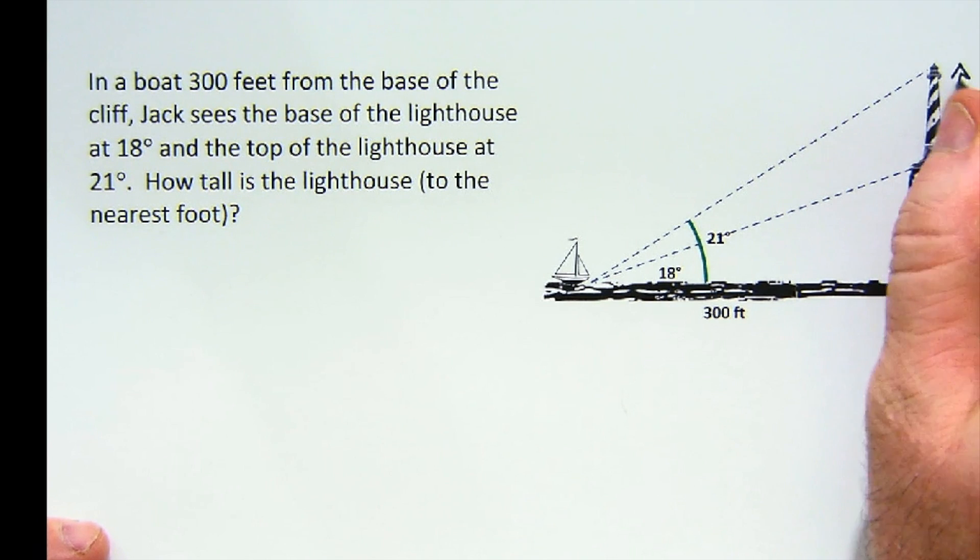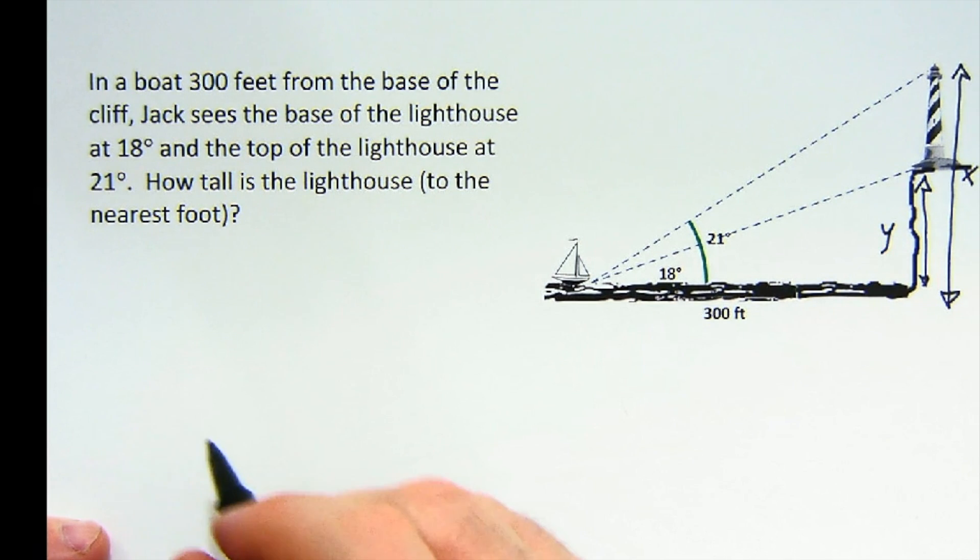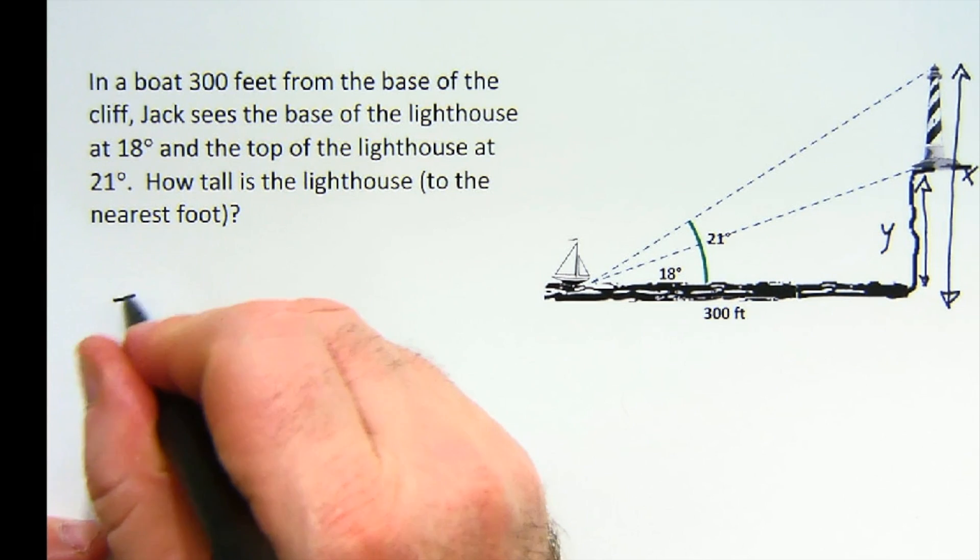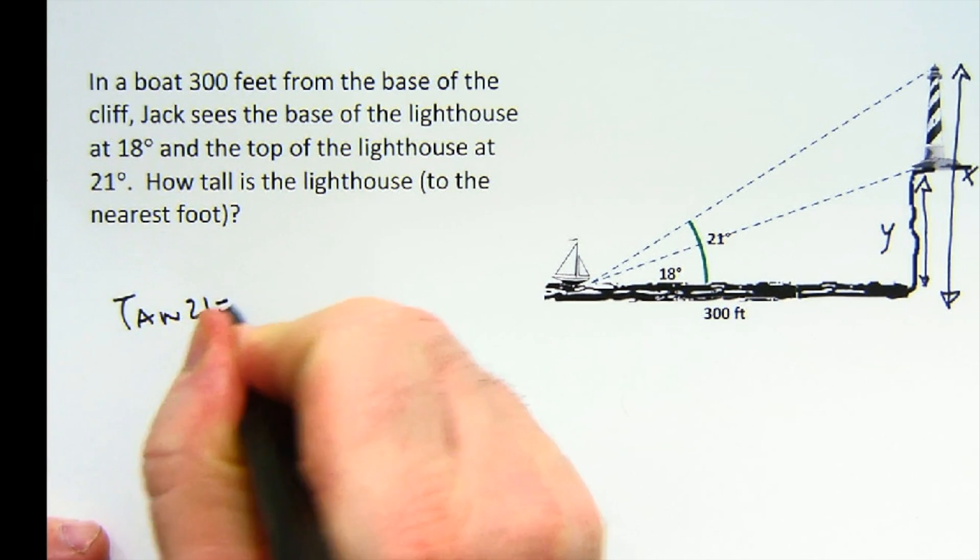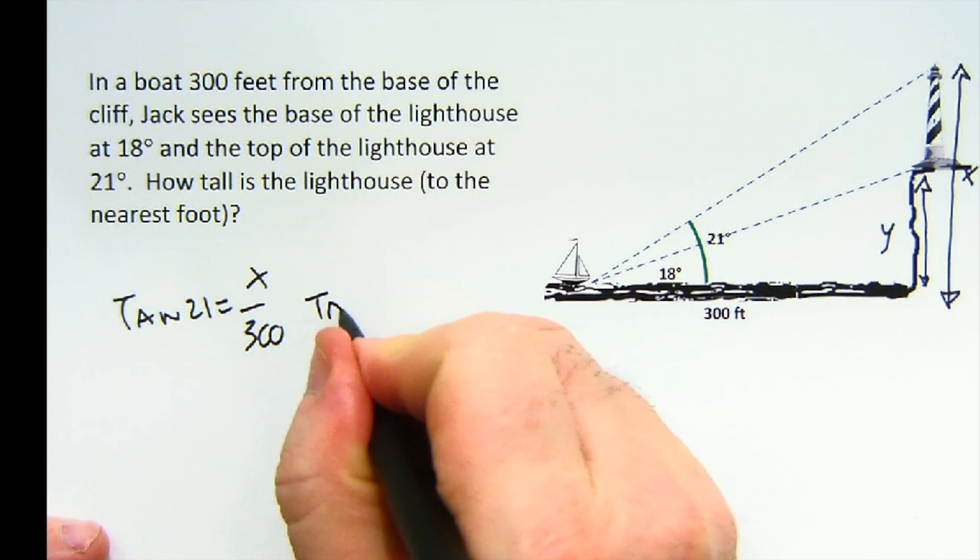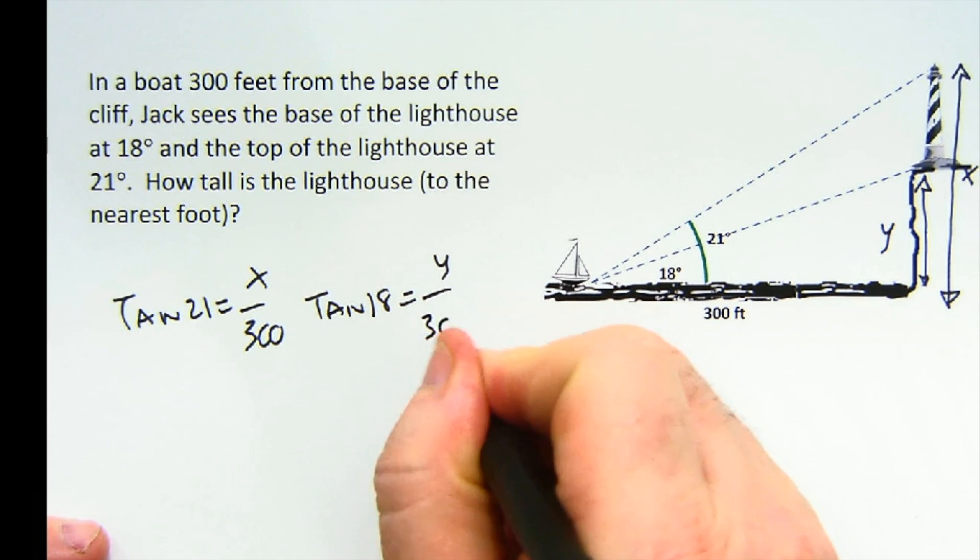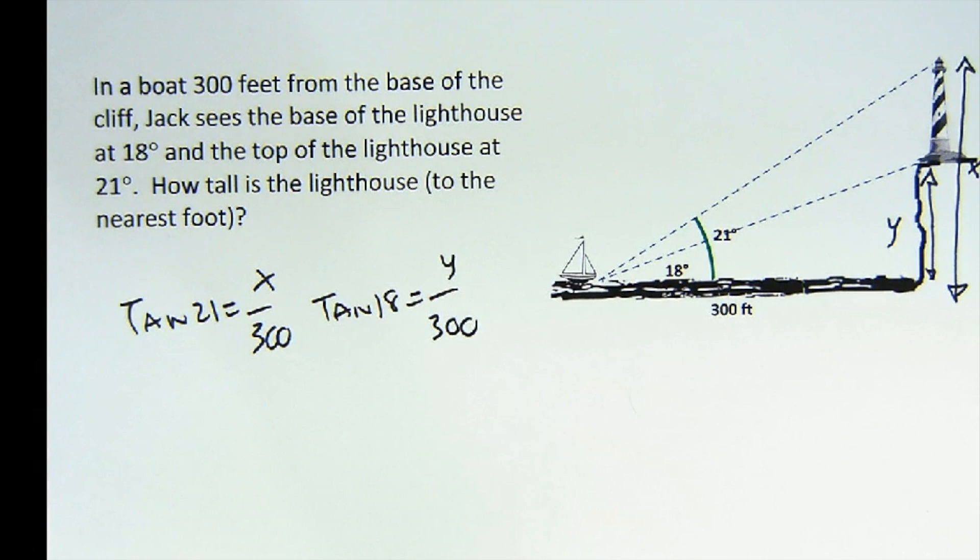Again, the idea is to solve for the entire value, we'll call that x, and then the smaller we'll call that y. And again, this is another tangent scenario, so the tangent of 21 is x over 300, and then the tangent of 18 is y over 300. And again, I just subtract those two values to get the total height of our lighthouse.